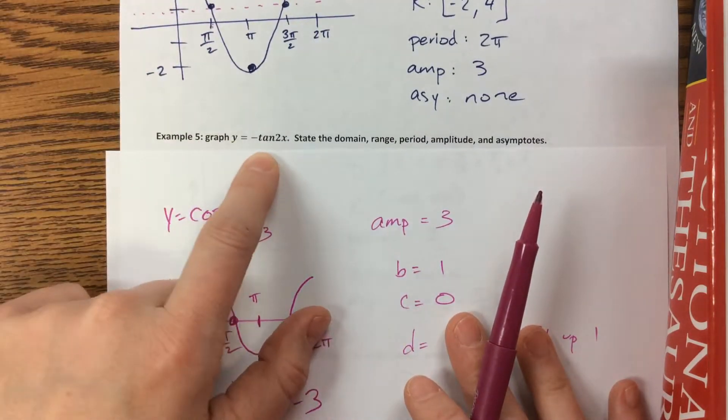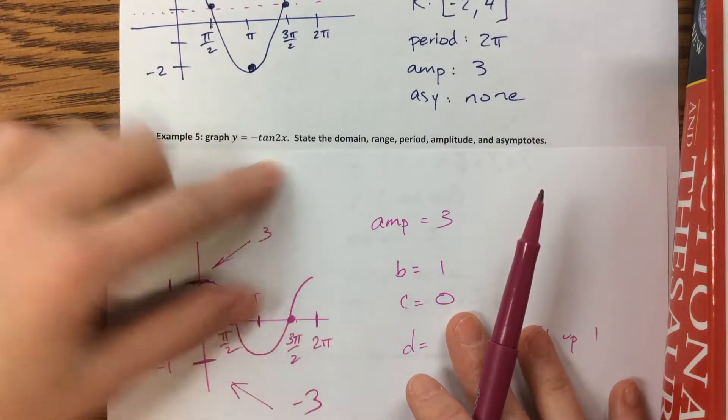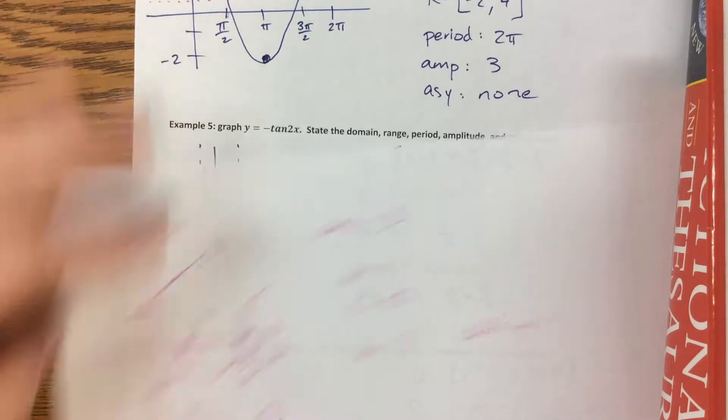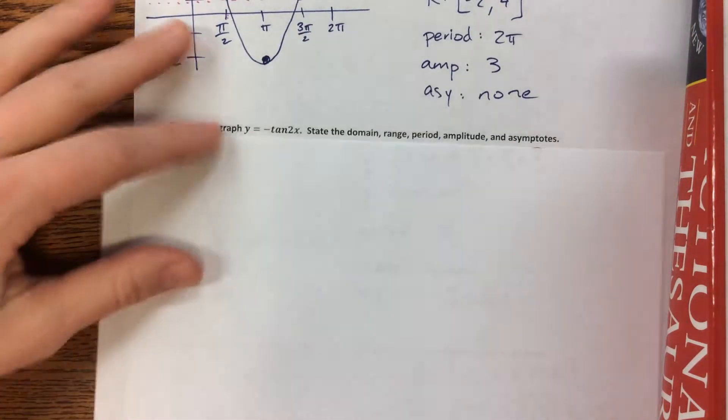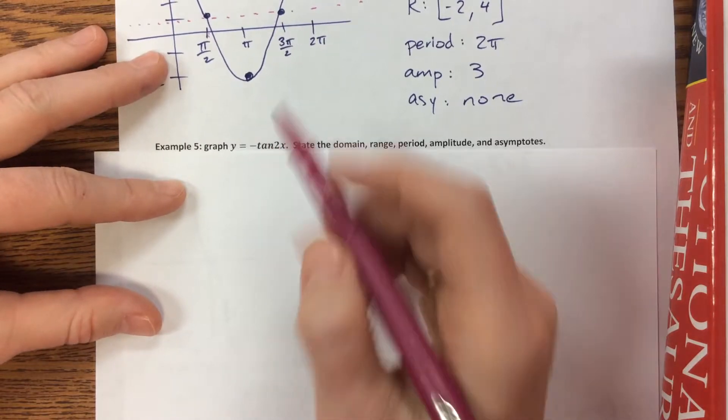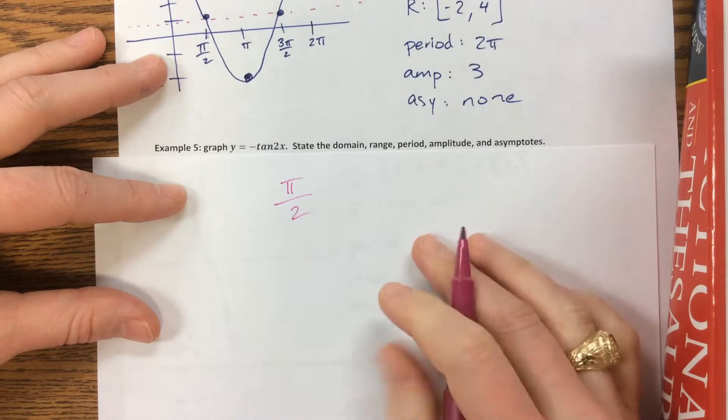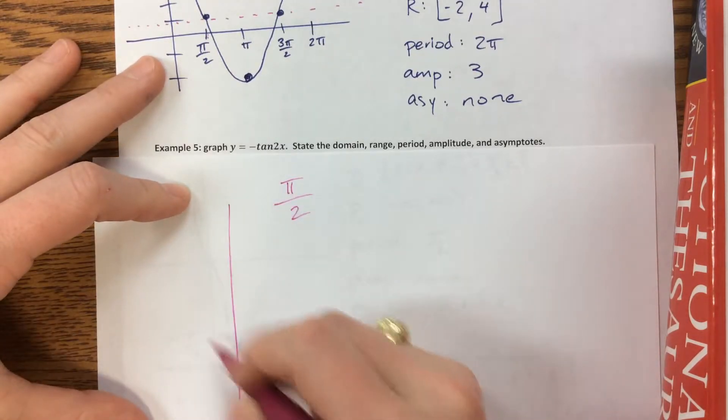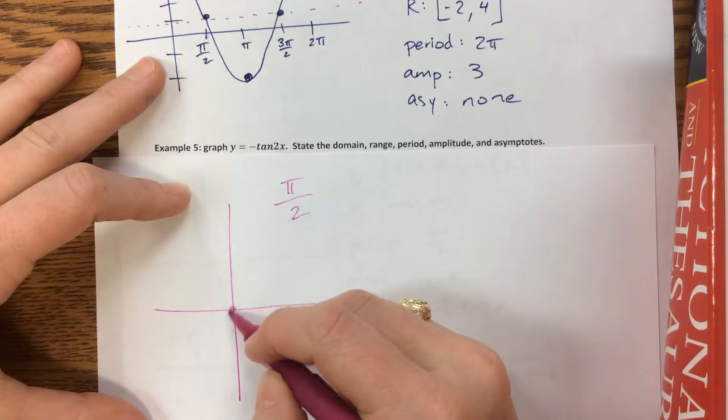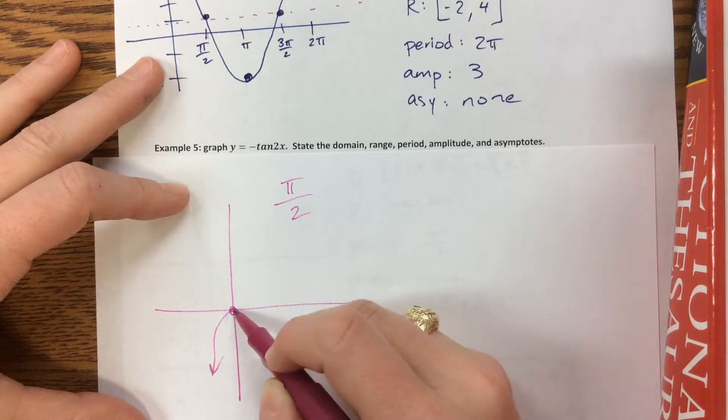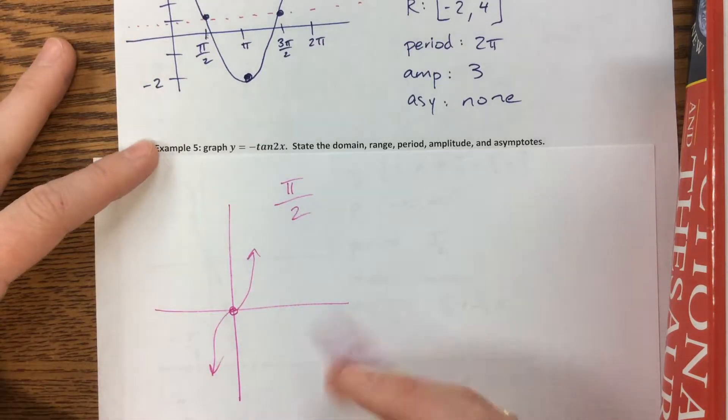Okay, so the next one, we have y equals negative tangent of 2x. So on that one, we have changed our period. If you remember, tangent's parent function has a period of π. So this is π/2. So now, instead of, so tangent looks like this. That's the parent function of tangent.